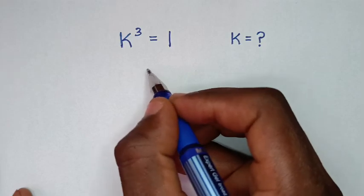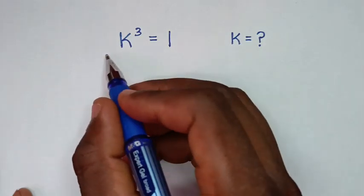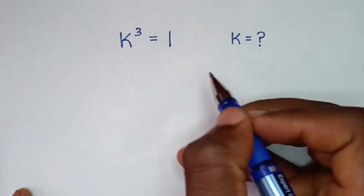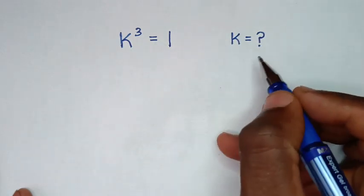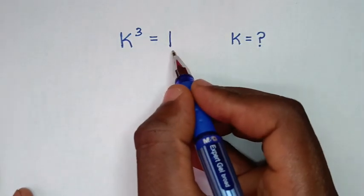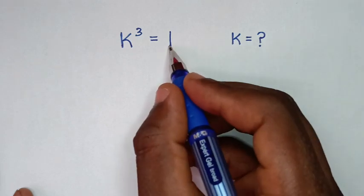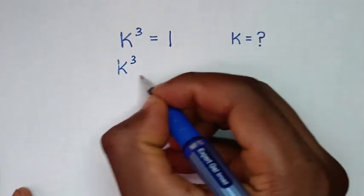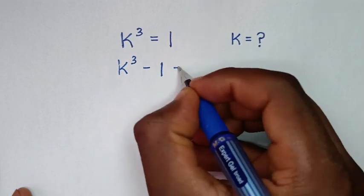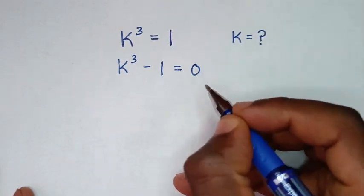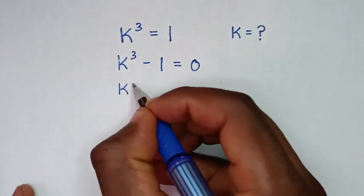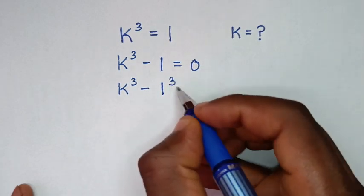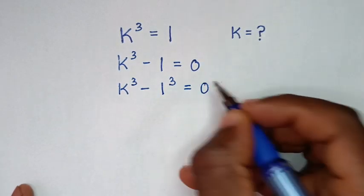Hello, you are welcome to solve this math problem of k power 3 is equal to 1, to find the values of k from this equation. In the first step we'll take this one to the left side, so it will be k power 3 minus 1 is equal to 0. Then k power 3 minus 1 is the same as 1 power 3, then is equal to 0.